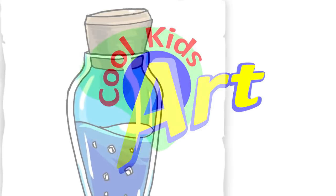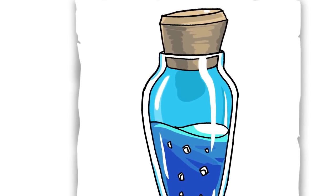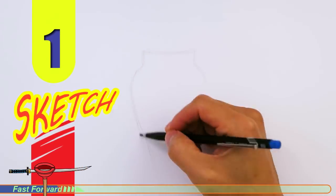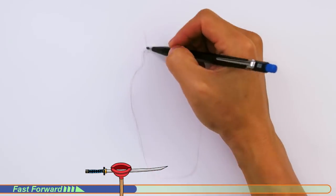Hey, welcome back to Kool Kids Art. Let's draw something really simple—the mini shield potion in Fortnite. Let's get started with a quick sketch, and then I'll show you line by line how you can draw this.